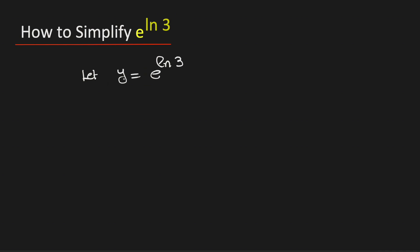That is, we need to find the value of y. Now take the natural logarithms on both sides. So we have ln of y is equal to ln of e to the power ln of 3.